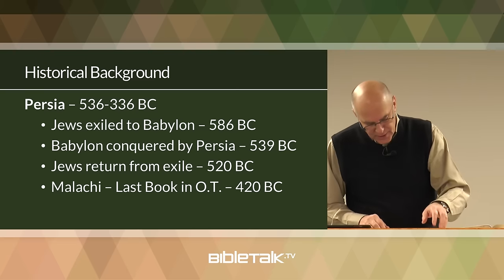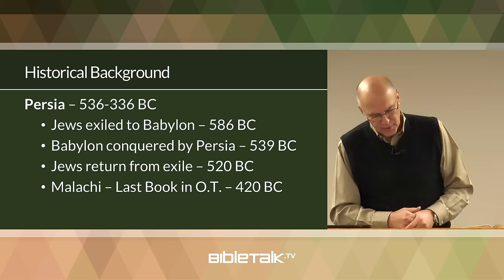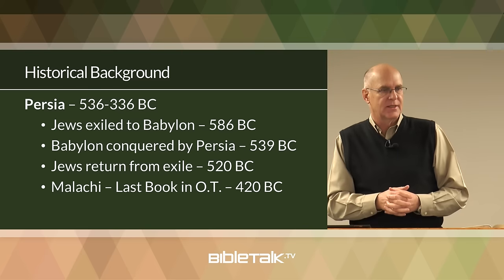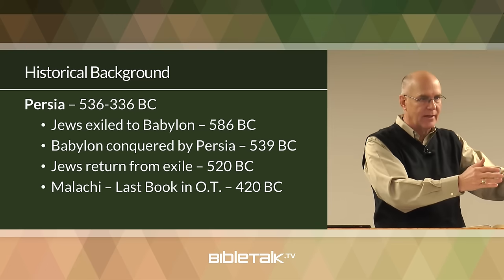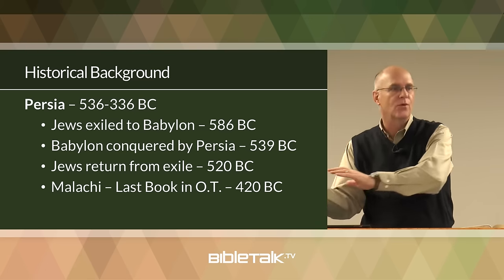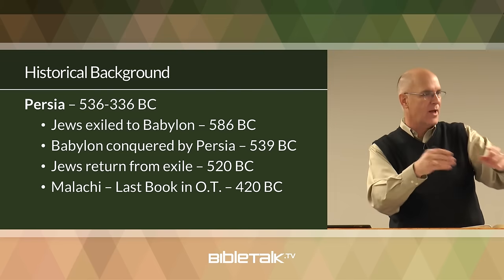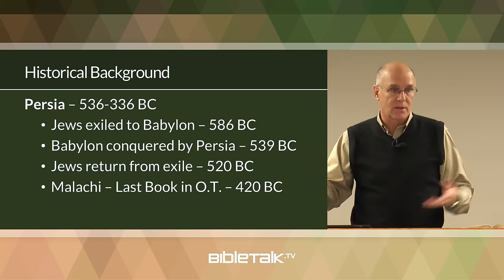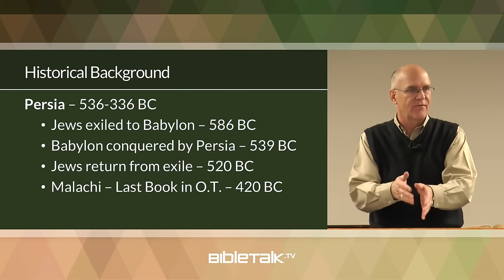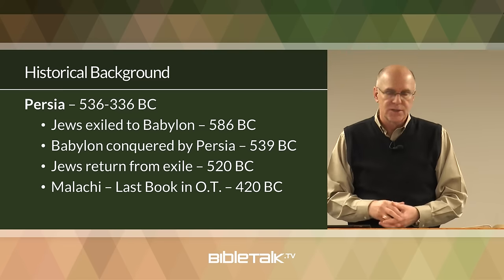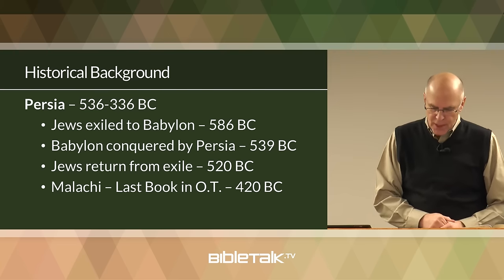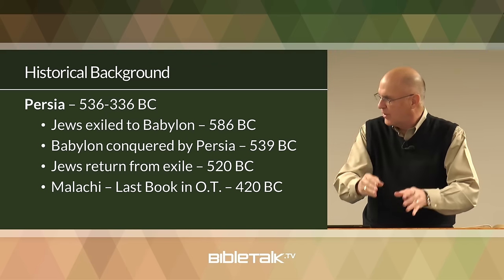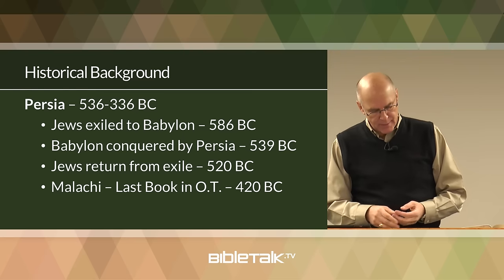Historically, a small remnant returned to rebuild the city and the temple around 520 BC, and others followed to resettle the land over the next century. It wasn't that they were in exile and then all came back at once — they came back sporadically. Many stayed in Babylon because they had been there for generations, had businesses, farms — it was home. When we read Ezra, Nehemiah, and Malachi, those writers describe that period of restoration.